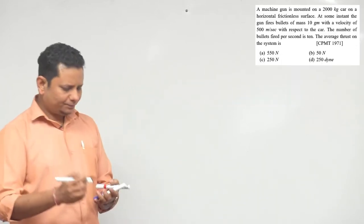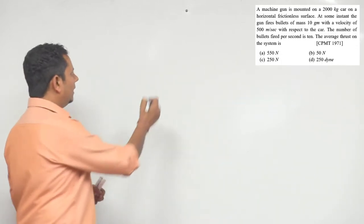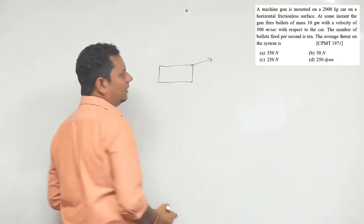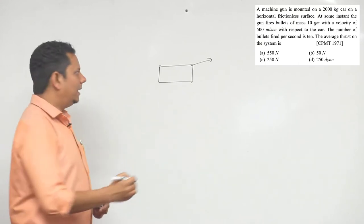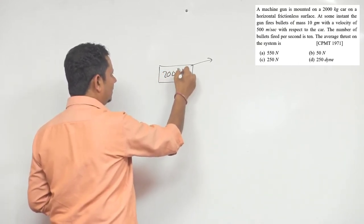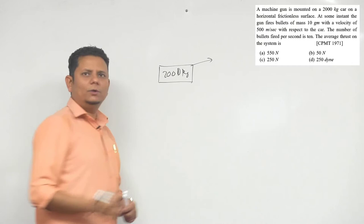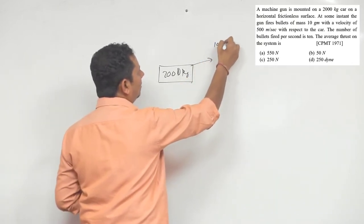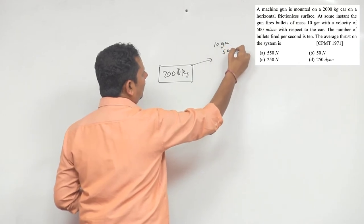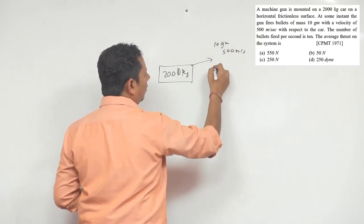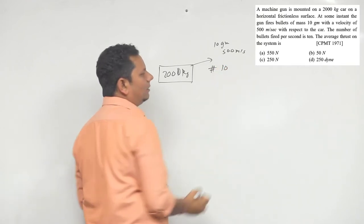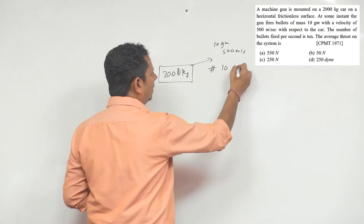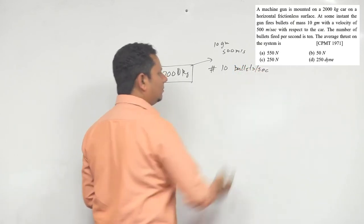Now, simple question. This machine gun is mounted here and here we have bullets fired. So this data is given by our car - this is 2000 kg. When we have bullets fired, 10 grams of bullets at 500 meter per second, and number of bullets, that is 10 bullets per second, so 10 bullets per second we have fire.